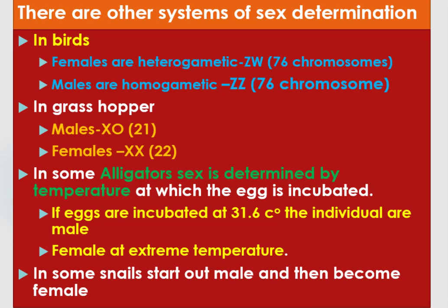There are other systems of sex determination. For example, in birds, females are heterogametic and contain ZW chromosomes, with a total of 76 chromosomes, while males are homogametic with ZZ chromosomes, also 76 in number. In grasshoppers, males contain one X chromosome and have 21 chromosomes in total, while females contain XX chromosomes and have 22 chromosomes.